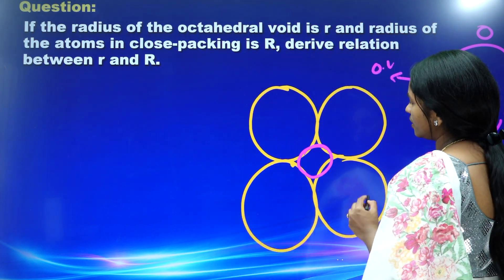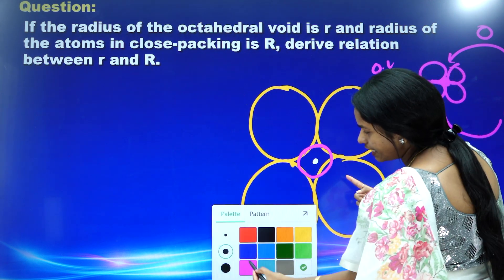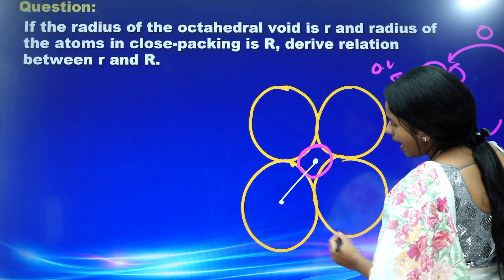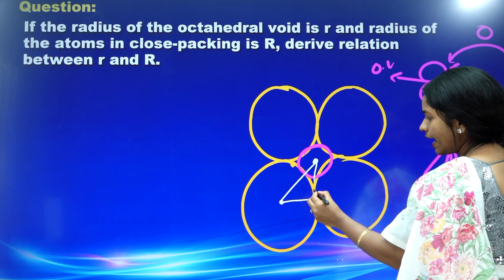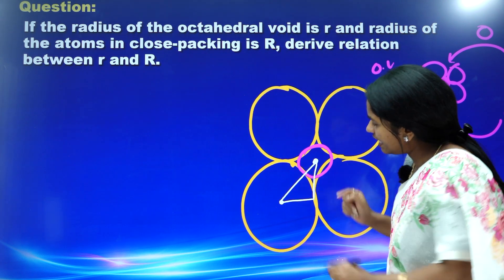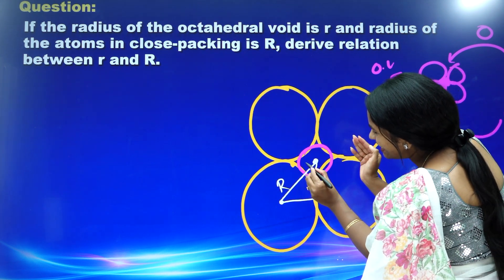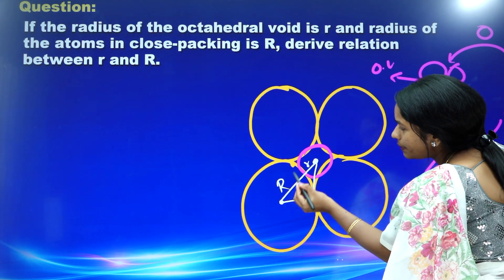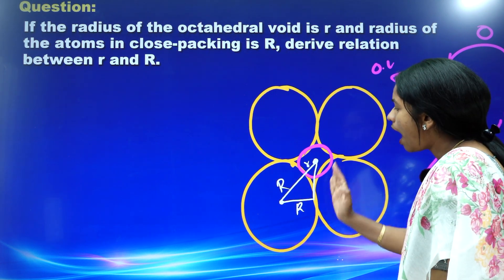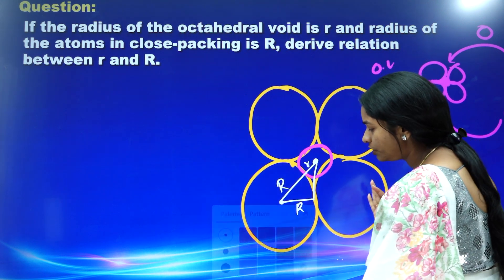Let us see how to derive this expression. This is the center of the octahedron. Now, draw one line from here to here, and one line from here to here. The center of the atom to its outer shell is capital R. From the outer shell to the center of the void is small r, and this is capital R. How to find the relation? I am going to teach you now.